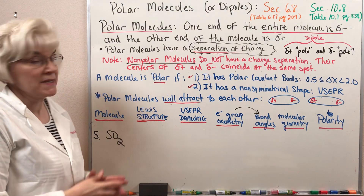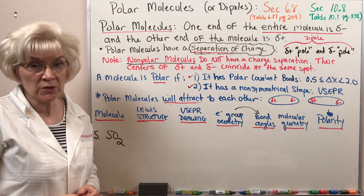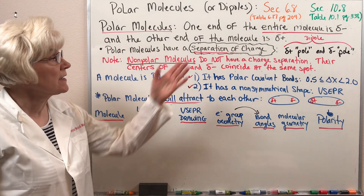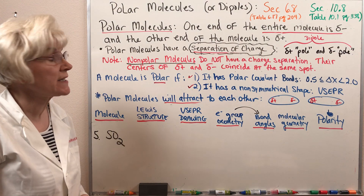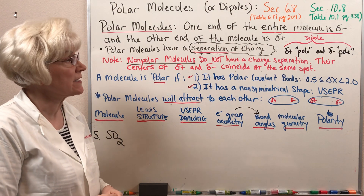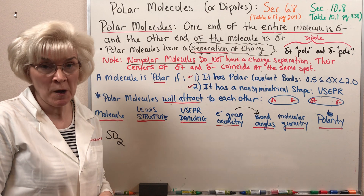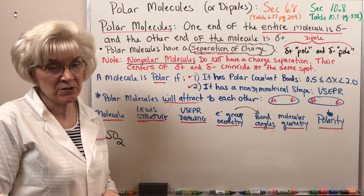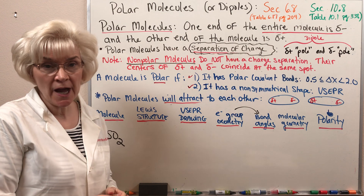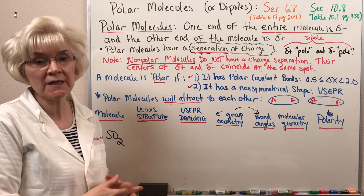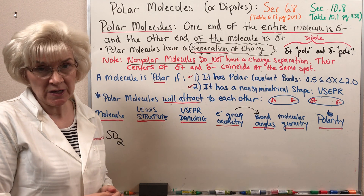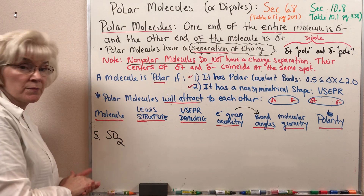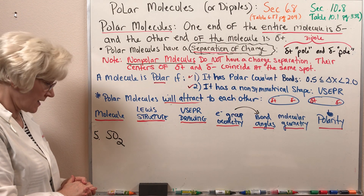In our last segment discussing polar molecules, we're going to consider the last two examples found on either table 6.17 or table 10.1 in either the Chem 2a or Chem 22 textbook. So if you don't have your textbook out and open, now would be a good time to do so. Let's take a look at the example of sulfur dioxide.